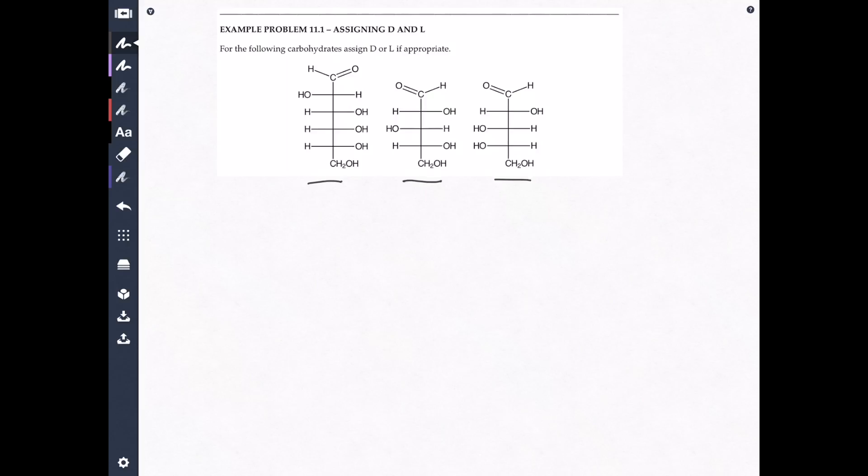Now, a Fischer projection is a very simple, clean way of representing a carbohydrate, especially a monosaccharide. Monosaccharide, remember, is a simple, single sugar unit. So now, in the Fischer projection, there are these things called chiral carbons.